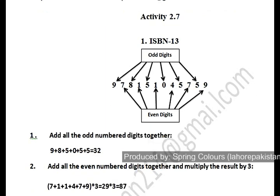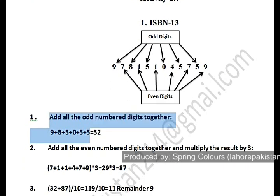In the ISBN-13 method, you divide a number into odd and even places. For example, 9 is standing at the first place which is an odd place, then 8 is at the third place, then 5th, 7th, 9th, and 11th place. All digits at odd places are added together first. I have added 9, 8, 5, 0, 5, and 5 — the answer is 32.